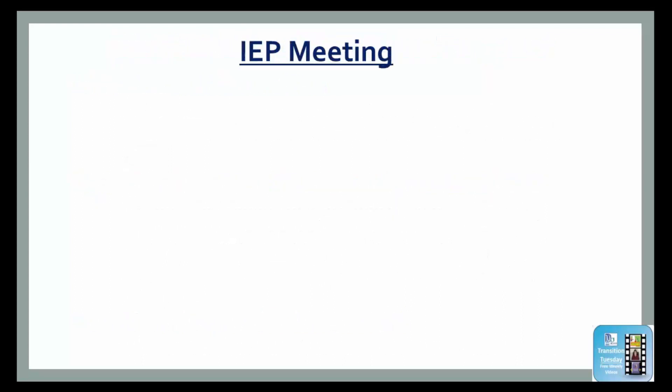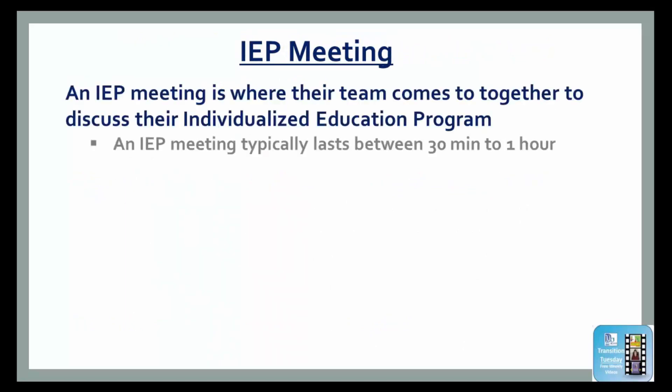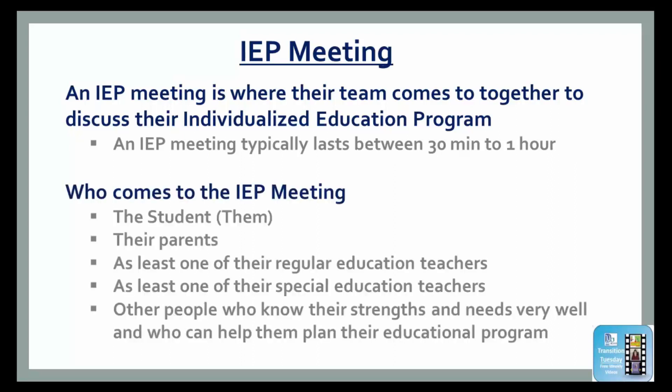Next, explain to your students that the IEP meeting is where their team comes together to discuss their individualized education program, and that their meeting typically lasts between 30 minutes to an hour. The people who usually attend the meeting are them — the student — their parents, at least one of their regular education teachers, at least one of their special education teachers, and other people who know their strengths and needs very well and who can help them plan their educational program.